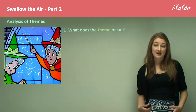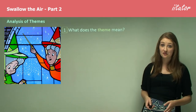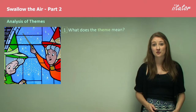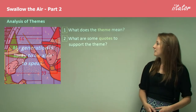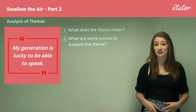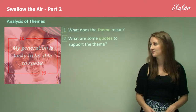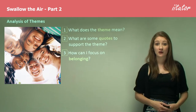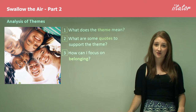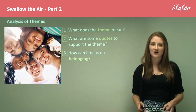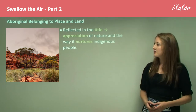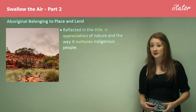When analysing these themes we're going to look at three issues: firstly, what does the theme mean — a bit of an explanation of what that actually means; secondly, what are some quotes to support the theme — specific examples from the text; and also, how can I focus on belonging — how can I bring these themes, techniques, and quotes back to my area of study and those key words in the rubric. So the first theme is Aboriginal belonging to place and land.